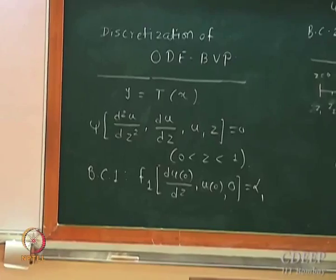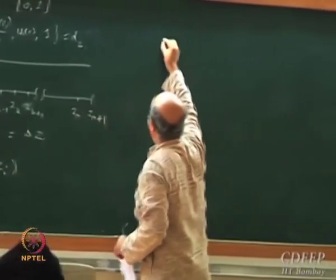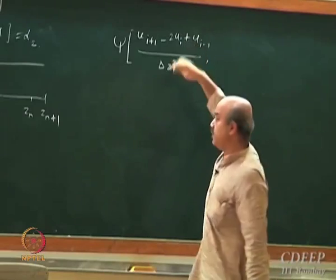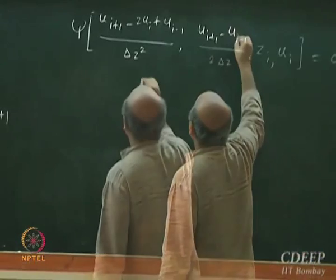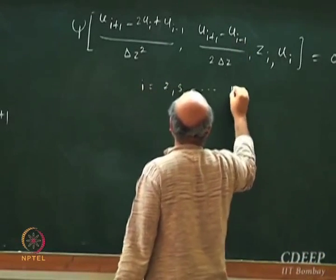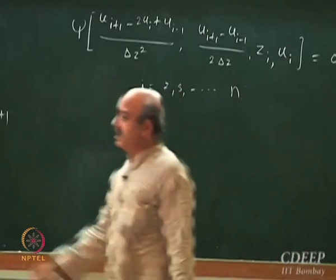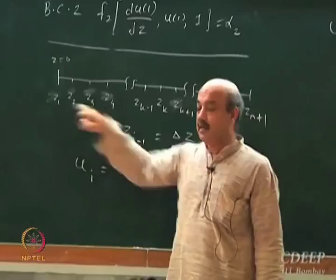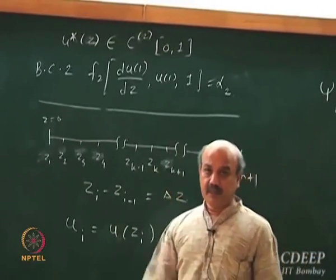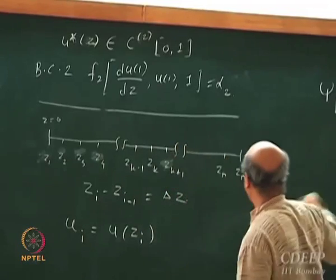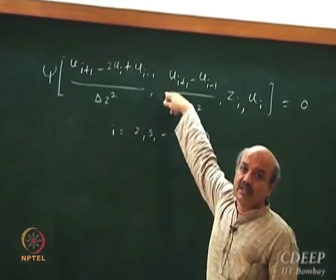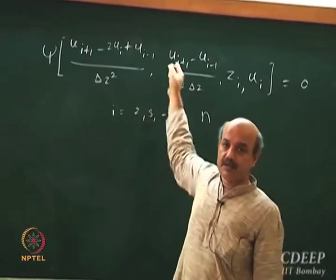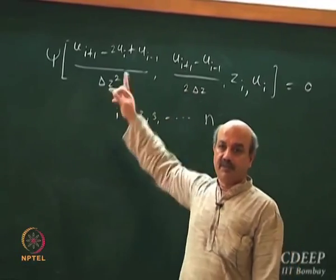We marked the dependent variable values at grid points as u_i, then converted the boundary value problem — the differential equation — into a set of algebraic equations by approximating the second and first derivatives using Taylor series. At all the internal grid points z2, z3, z4 up to z_n, we enforce this equation. Note that enforcing this equation does not mean we are solving the exact problem; we are solving an approximate problem where we enforce the residual equal to zero.